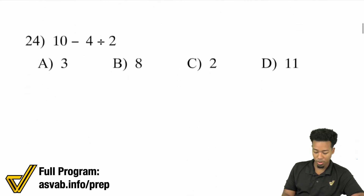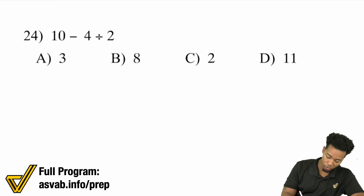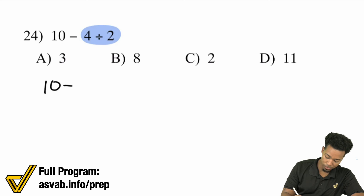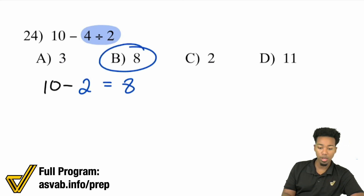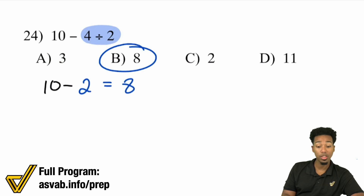Number 24: 10 minus 4 divided by 2. Here we'll go ahead and take care of 4 divided by 2 first — that's 2. So we have 10 minus 2, which equals 8. If you'd done this the wrong way, you would have done 10 minus 4 first, getting 6, then 6 divided by 2 is 3, and gotten A accidentally. Remember: follow the order of operations.